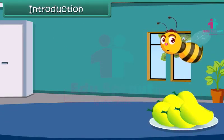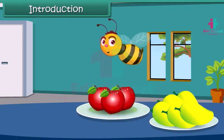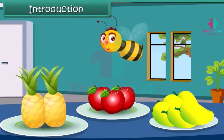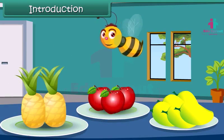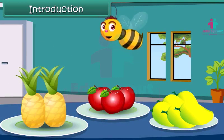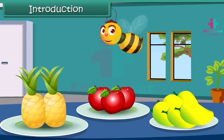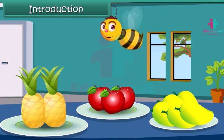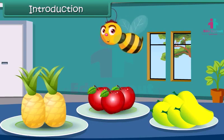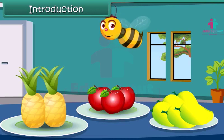Hello friends! Here you see some fruits kept on the table. We have 5 mangoes, 3 apples and 2 pineapples. Describing data in this manner is called data representation.